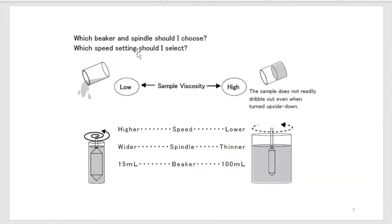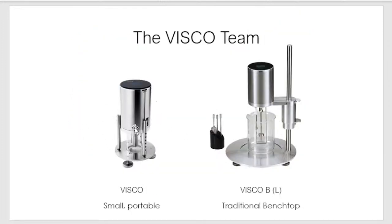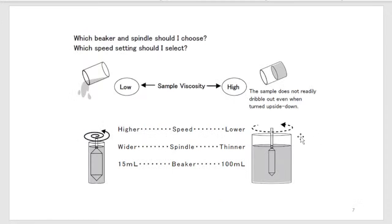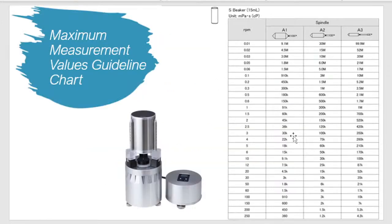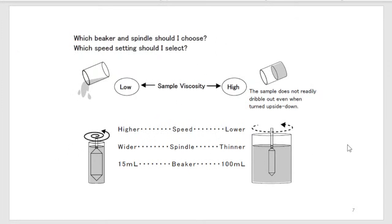This distinction is applicable to the portable VSCO because the VSCO BL is standard — it uses a 500 mL container, so there are no different container options. The VSCO does have two different container options. If you're using the temperature controller with the VSCO, you'll be using the small beaker only, which holds 50 mL.